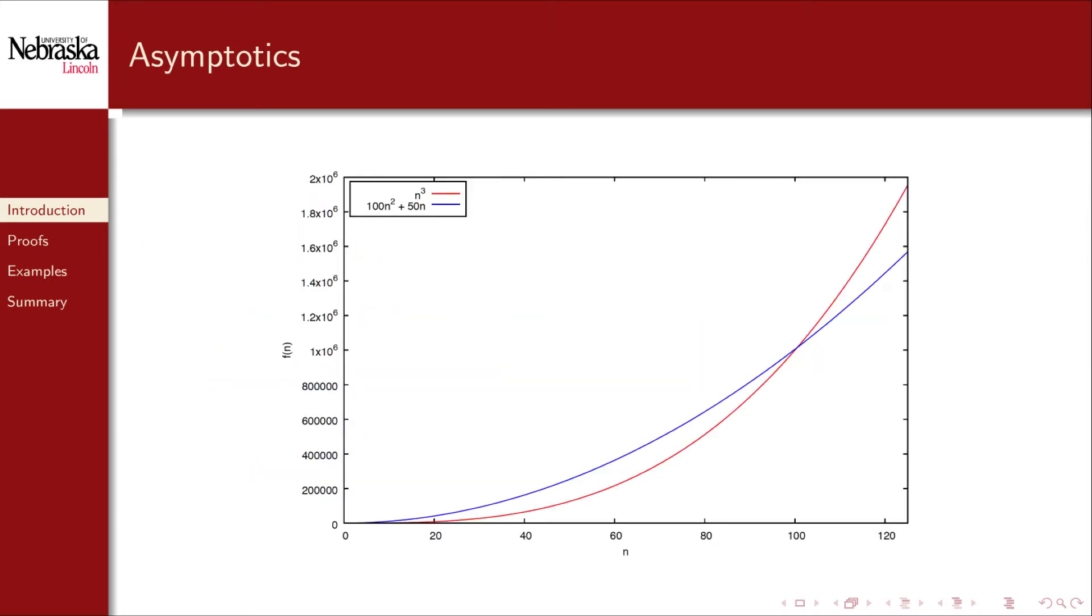For example, consider the two plots pictured here. One plot is n cubed, and the other is a quadratic function. If we only examined the behavior for small inputs, less than 100, we would get the misimpression that the cubic algorithm performs better because its plot is smaller, which corresponds to less computation time. However, if we examine the plots for input sizes greater than 100, it becomes clear that the cubic algorithm is worse, and in fact gets much worse for ever-increasing input sizes.